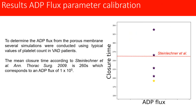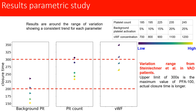It is important to say that the only parameter we calibrated was ADP flux. All the rest of the parameters were obtained from literature, and the initial conditions used were patient-specific VAD clinical data. Since we know the closure time for those patients, we can adapt the ADP flux to match the closure time. Once that parameter is fixed, we perform a parametric study varying the platelet count, the background platelet activity, and the vWF concentration.